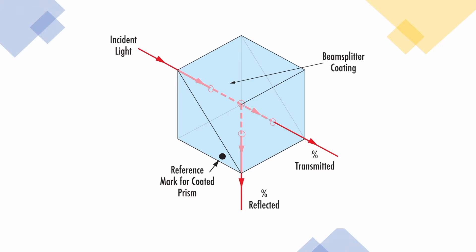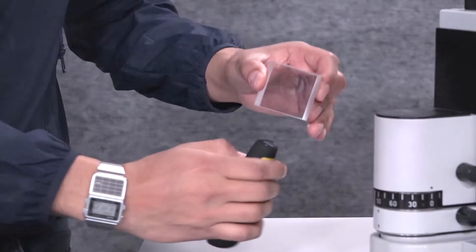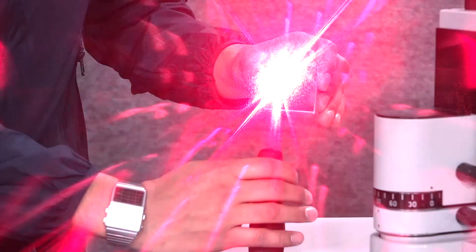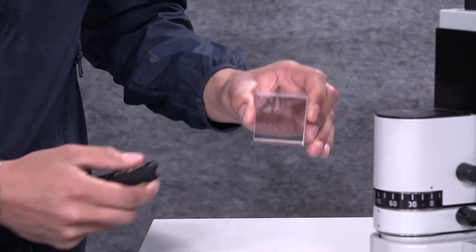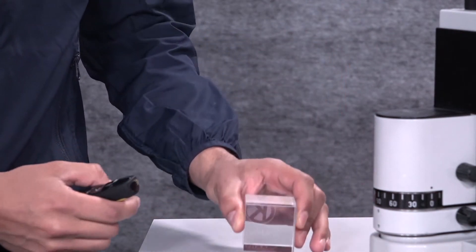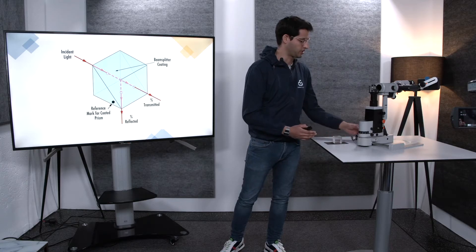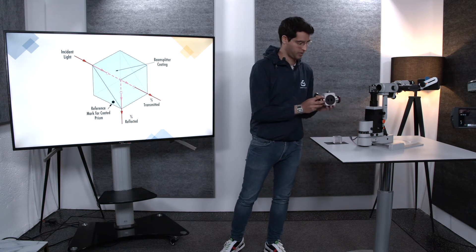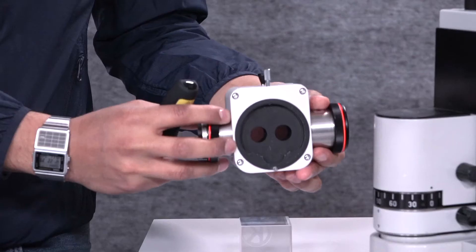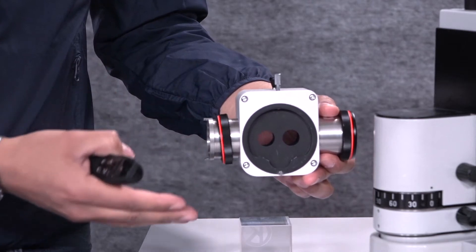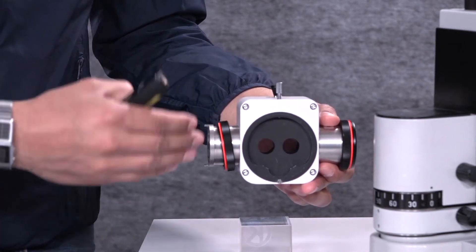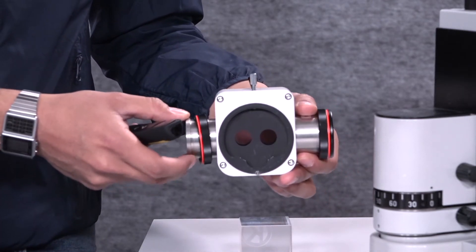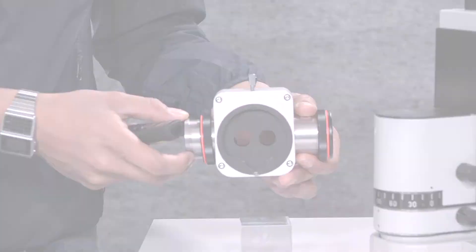Here you can see the optical component, and as you see, this prism takes part of the light and deviates it into a different orientation. Here is the mechanical attachment in which we place these optical components inside, and this is what you will find in your microscopes.